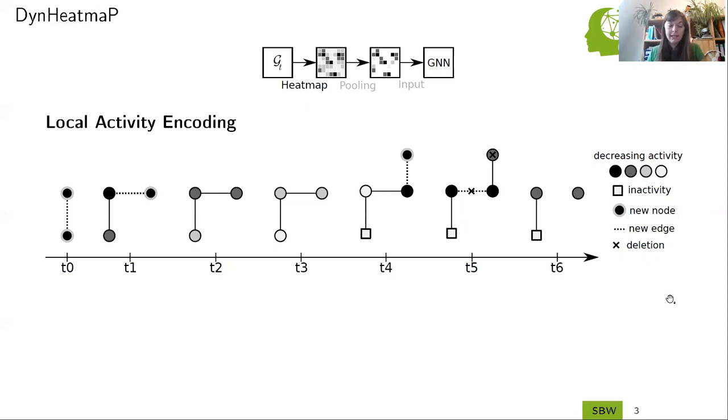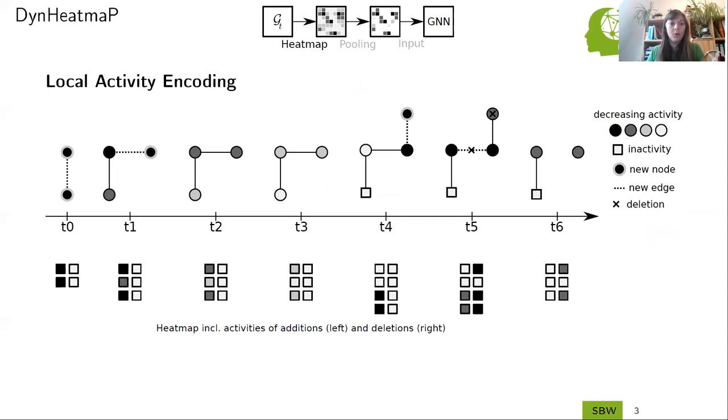And how do the heat maps look like for each timestamp? We basically accumulate all of the activities of the nodes within two vectors separately. The left one here is for the addition activity and the right one for the deletion activity. This is why the left vector starts dark with a high activity, and the right one is empty because there were no deletions happening at these timestamps. While, for example, at timestamp five, you can see that the first time the deletion activities become highly active.